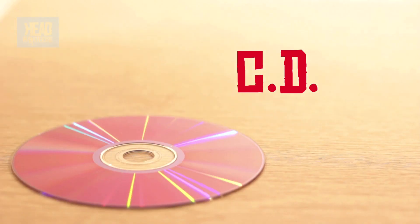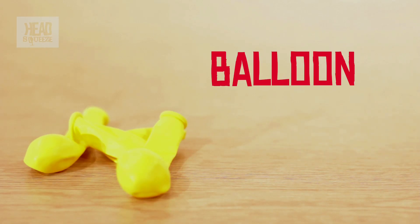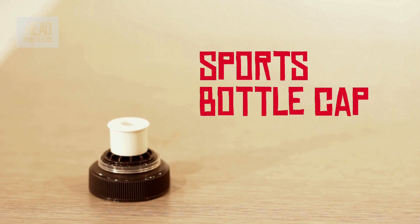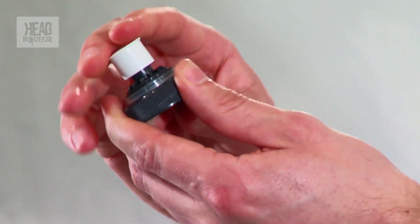We're going to need a CD, some glue, a balloon, and the lid off of a sports bottle. The reason we want one of those is so we can get that kind of open and closeable valve at the top there.